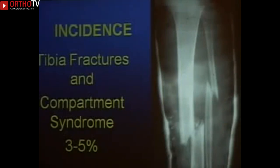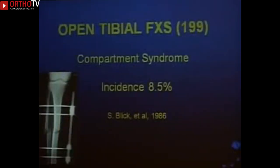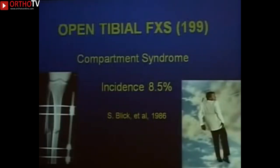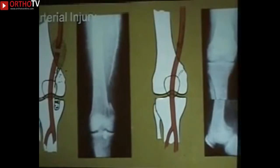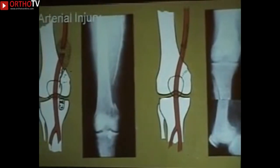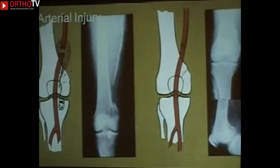The incidence with tibia fractures in adults runs somewhere between three and five percent, but with open tibia fractures in a series of 200, it can run up to eight percent. So open fractures in the tibia have a higher incidence because of increased trauma — an open fracture doesn't get you off the hook. Arterial injuries associated with compartment syndrome put the limb in double jeopardy: first ischemia from the arterial injury, then post-ischemic swelling after repair, and over four hours of arterial occlusion will produce a compartment syndrome.